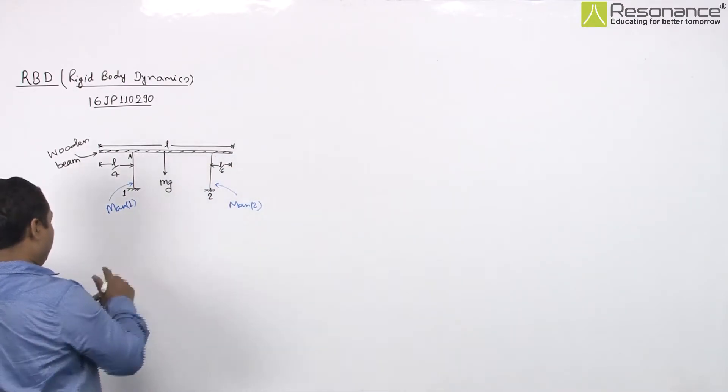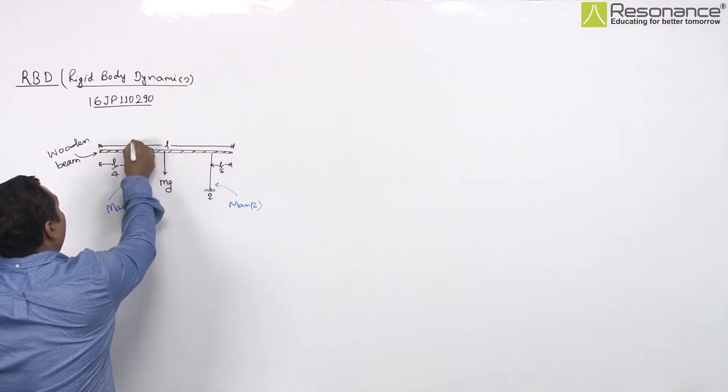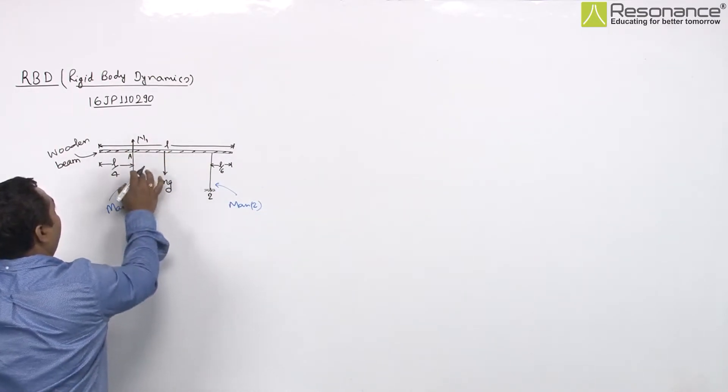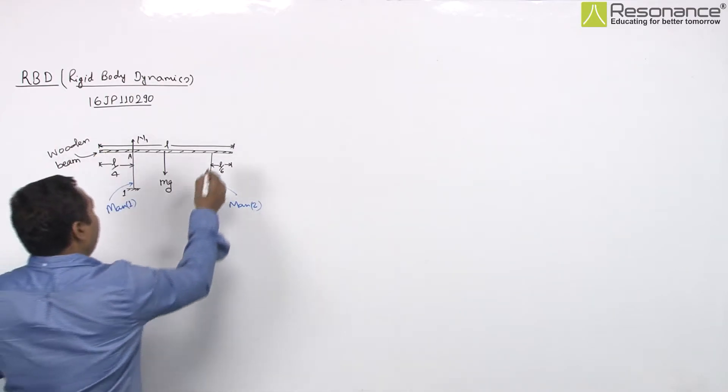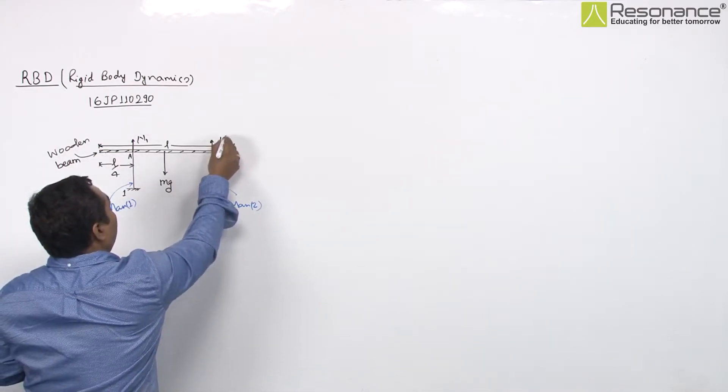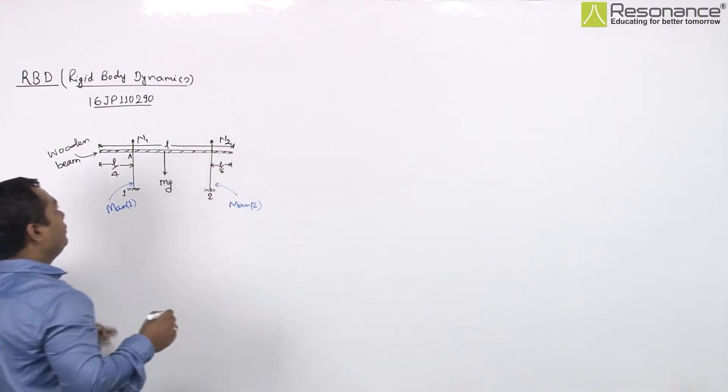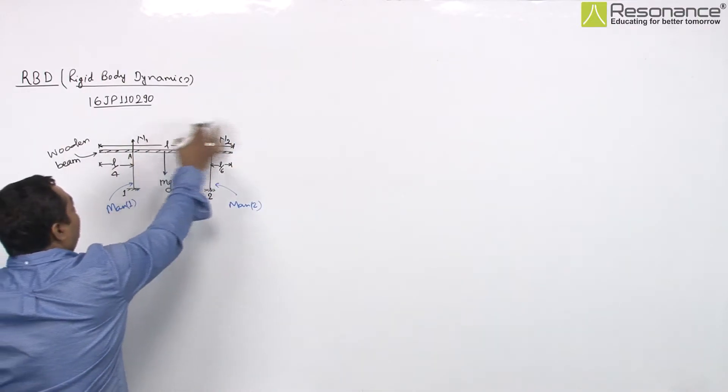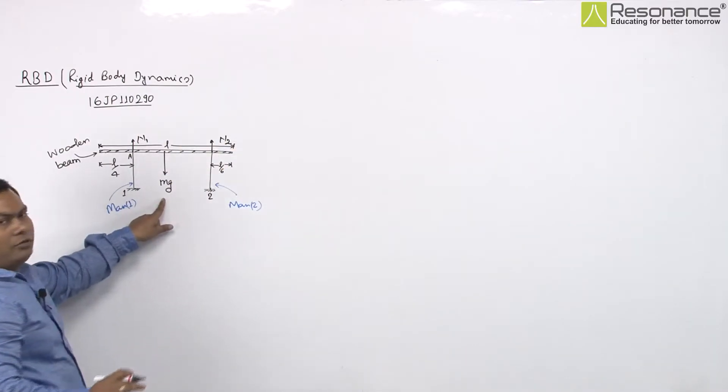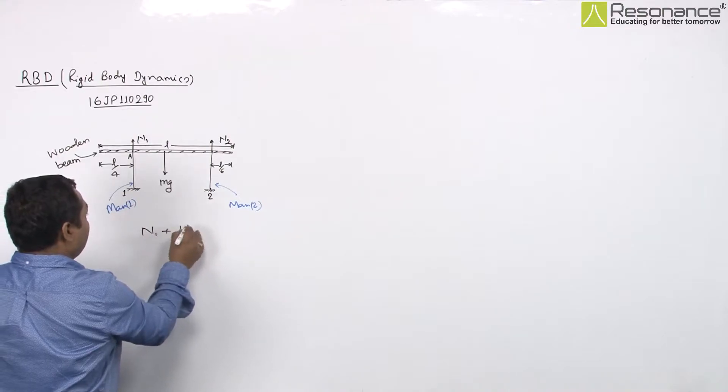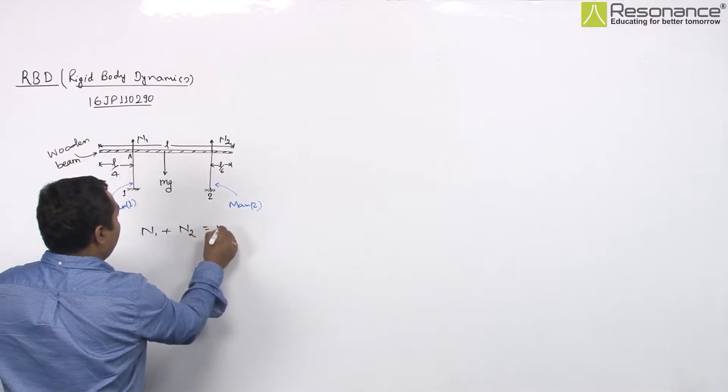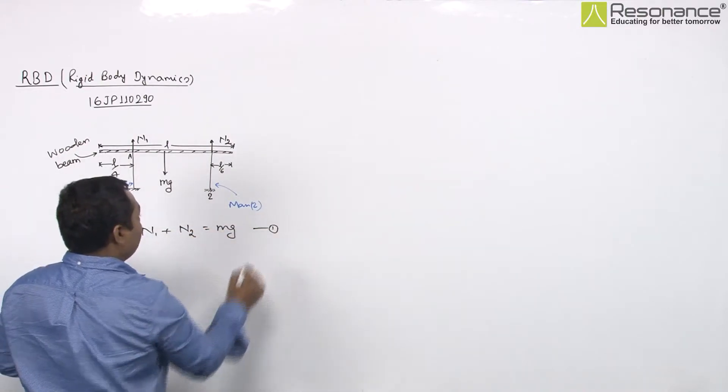At this point there will be a normal force N1 from man 1's head to the wooden beam, and here there will be another normal force N2. N1 plus N2 will be balanced by weight Mg. So our first equation will be N1 plus N2 equals Mg.